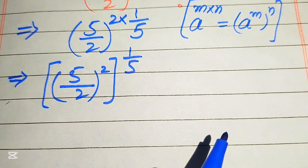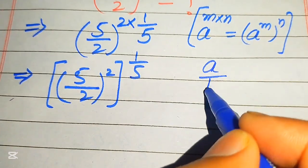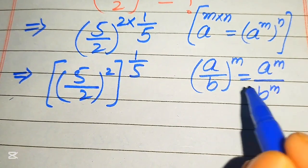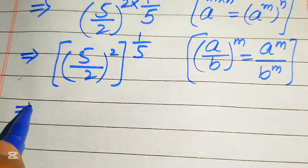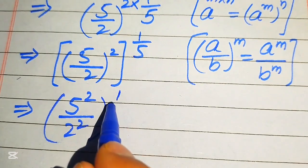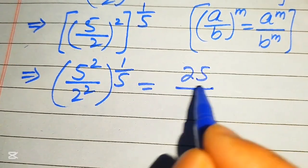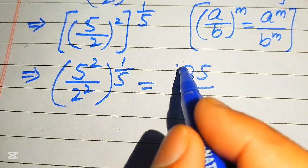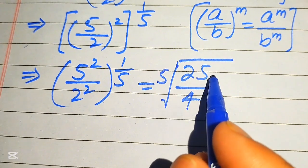In the next step, we apply another exponent law: if you have a over b to the power of m, it equals a to the power of m divided by b to the power of m. We apply the square separately to both values, giving us 5 squared divided by 2 squared, all to the power of 1 over 5. Since 5 squared is 25 and 2 squared is 4, we rewrite the 1 over 5 exponent in radical form as the 5th root of 25 over 4.